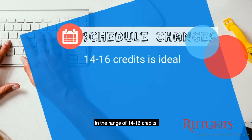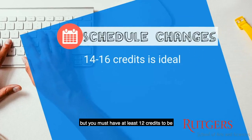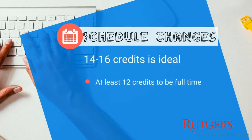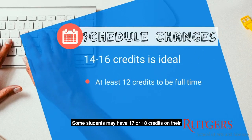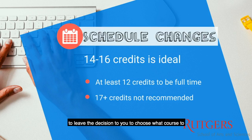Ideally, your first semester schedule should be in the range of 14 to 16 credits, but you must have at least 12 credits to be a full-time student. Some students may have 17 or 18 credits on their schedule because of the courses they requested. We do not recommend this course load, but we want to leave the decision to you to choose what course to remove during the add/drop period.